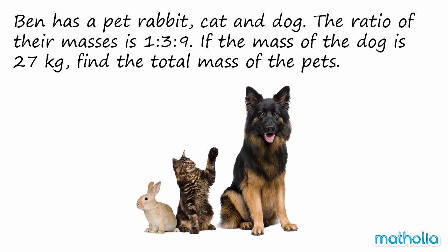Ben has a pet rabbit, cat and dog. The ratio of their masses is 1 to 3 to 9. If the mass of the dog is 27 kilograms, find the total mass of the pets.